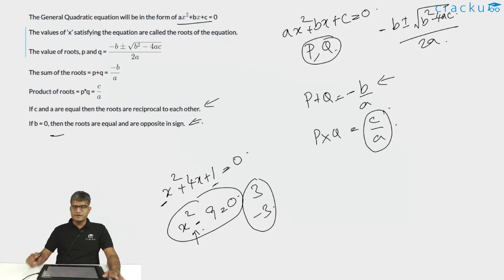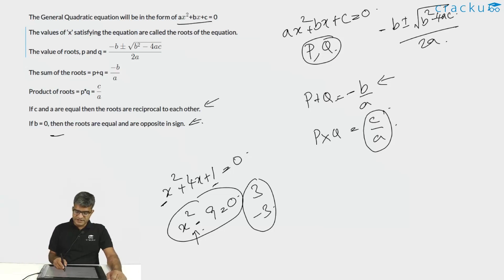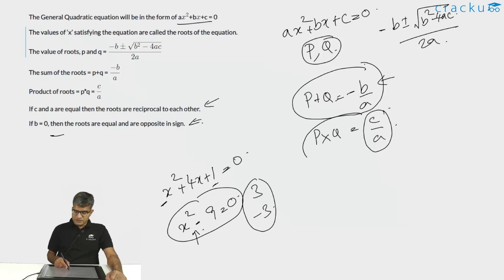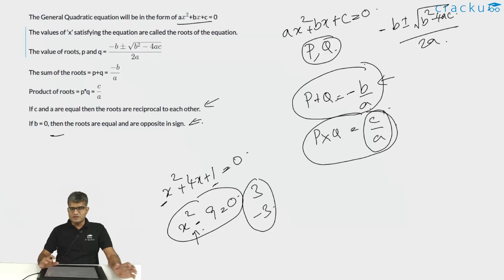If you don't want to remember all of these formulas, the two important ones to remember are: the sum of the two roots is -b/a, and the product of the two roots is c/a. Let us solve some questions so that you will understand this concept better.